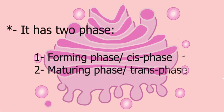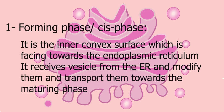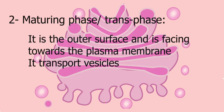The Golgi apparatus has two phases: the forming phase or cis phase, and the maturing phase or trans phase. The forming phase receives material and transports it towards the maturing phase. The maturing phase is the outer surface facing towards the plasma membrane and transports vesicles outward.